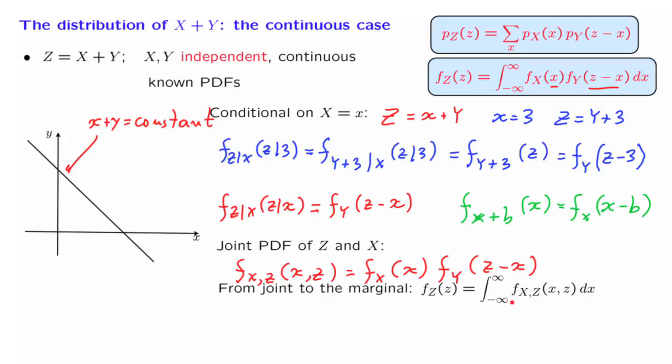If we take the joint PDF and integrate with respect to one argument, we obtain the marginal PDF of the other random variable. Using this specific form that we have for the joint PDF in this formula, we have finally obtained this expression. This is the integral of the joint PDF of X with Z, integrated over all x's. And this proves this convolution formula.